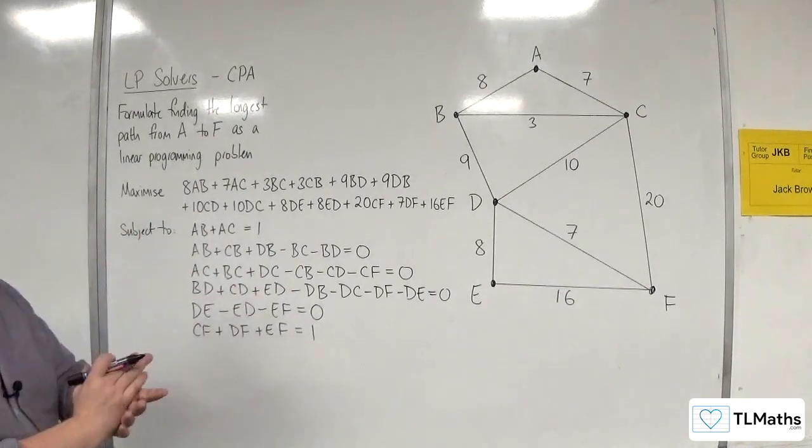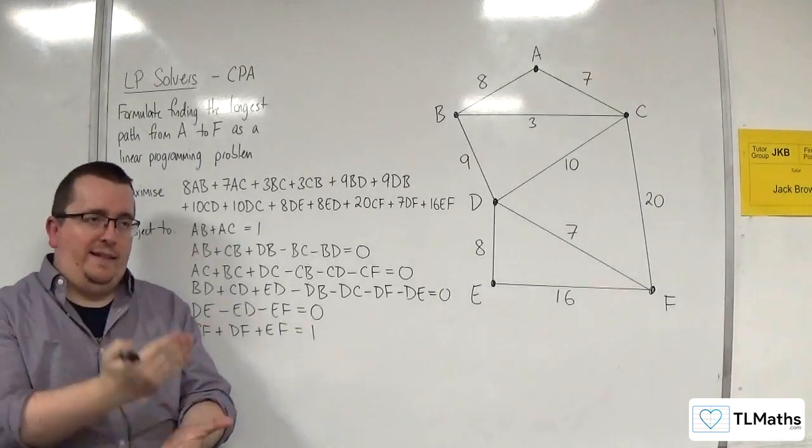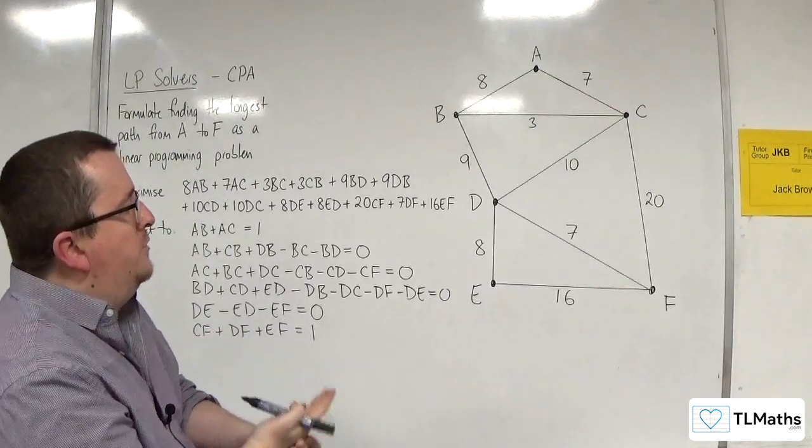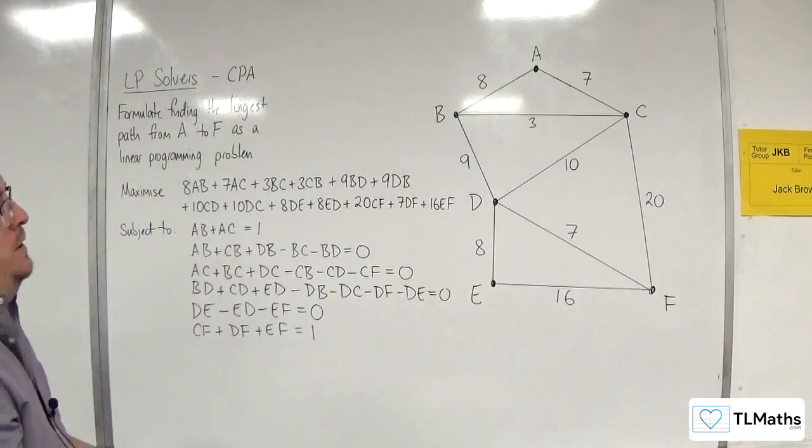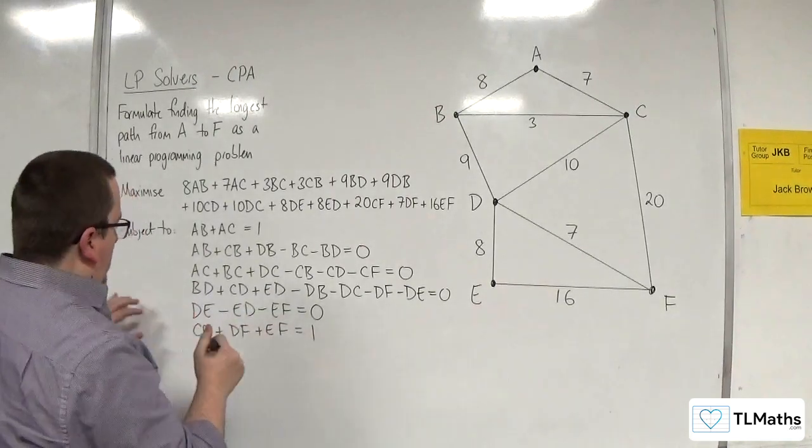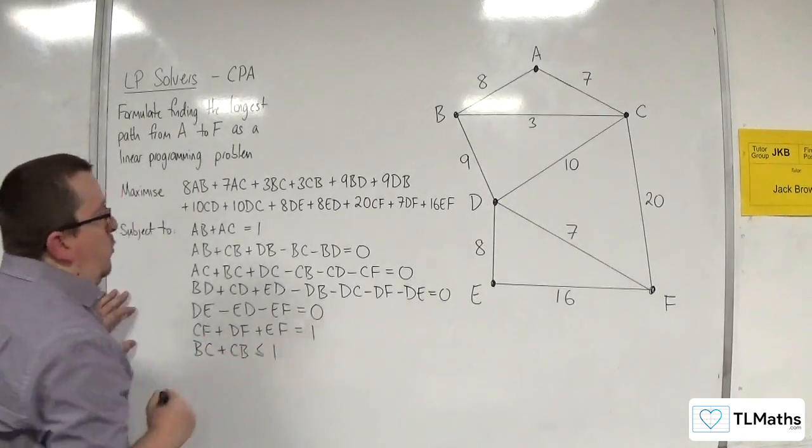Right, then we've got the added constraints to stop the repeating edges. So all of the edges that could be repeated need a constraint. So the first one is BC, so BC plus CB has got to be less than or equal to 1.